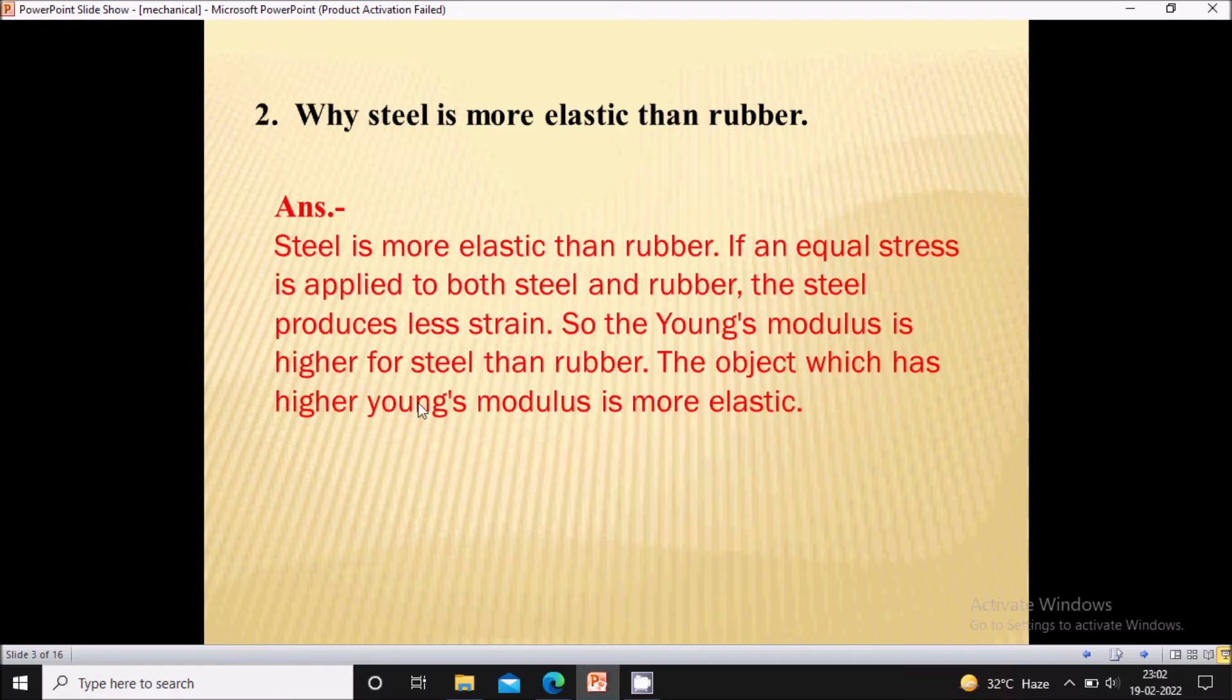So the object which has high young modulus is more elastic. That's why steel is more elastic than rubber.